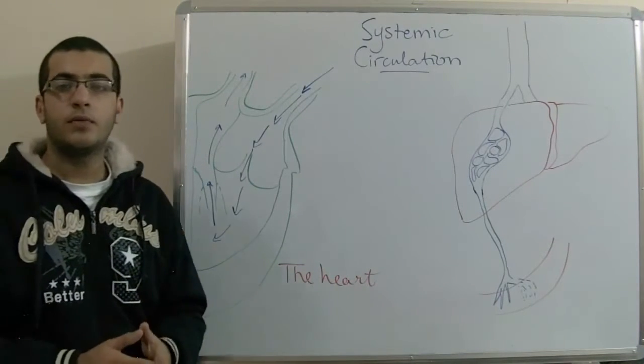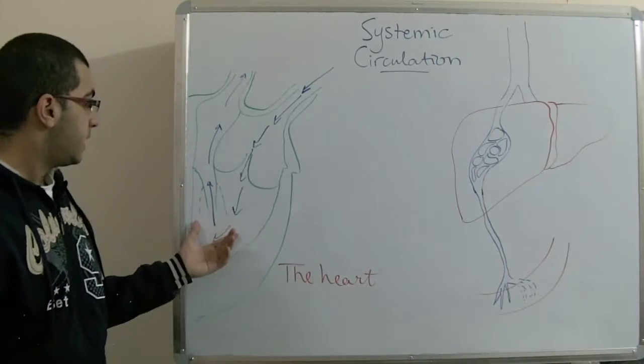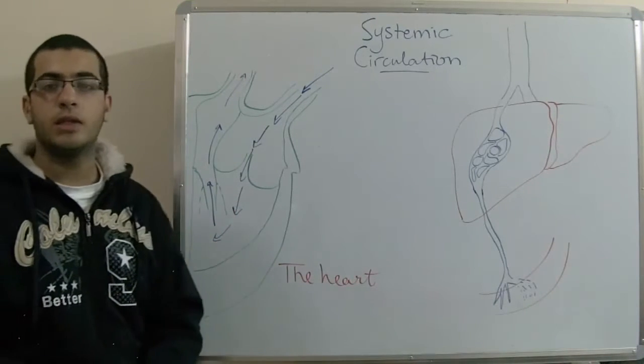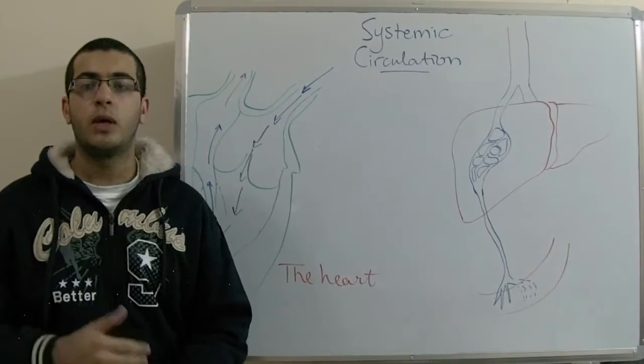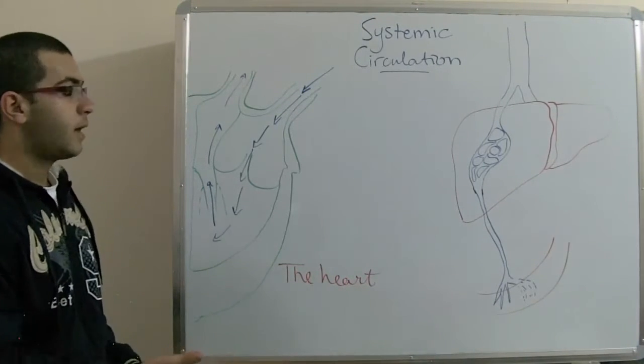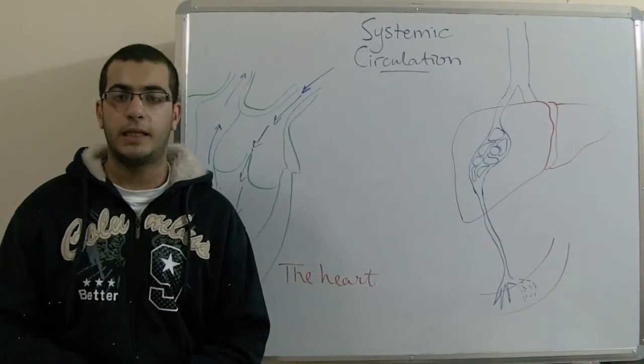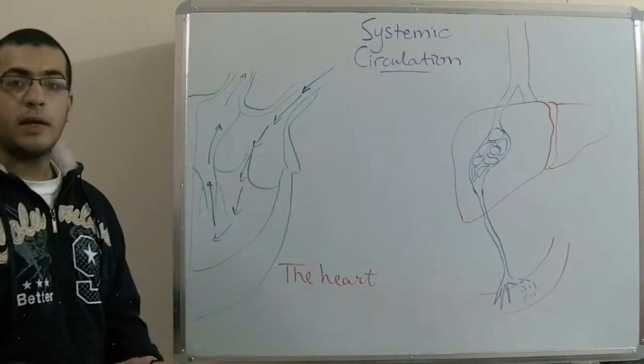So when the blood reaches the body organs, diffusion takes place. As this blood is carrying oxygen, oxygen diffuses from the blood through the thin capillary walls to provide the cells with oxygen in order to let them respire and produce the energy needed for carrying out the vital activities.